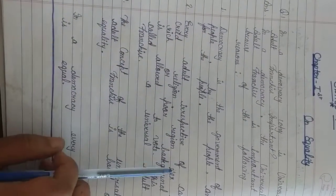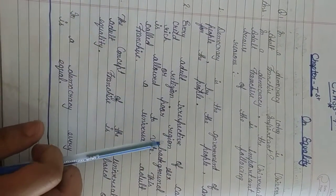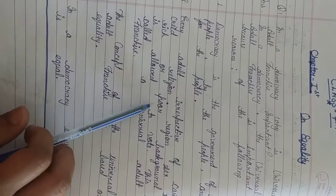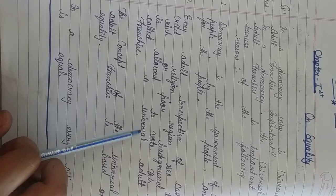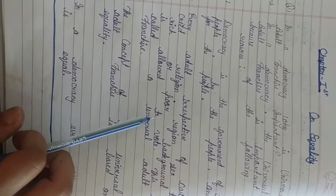Secondly, every adult, irrespective of caste, creed, religion, sex, rich or poor background is allowed to vote. And this is called universal adult franchise.